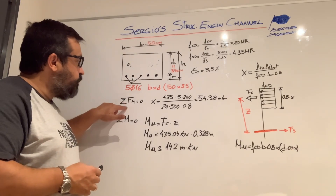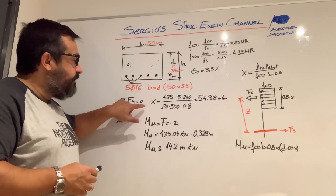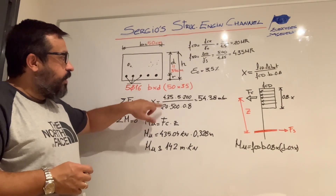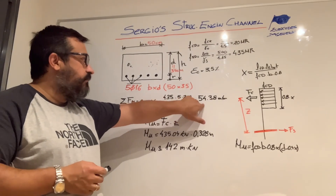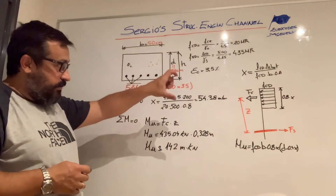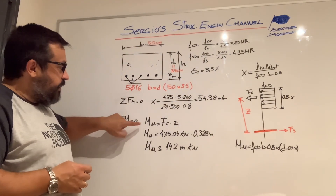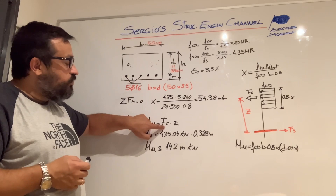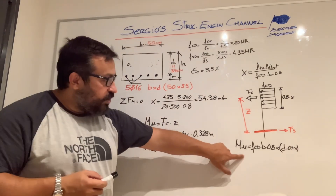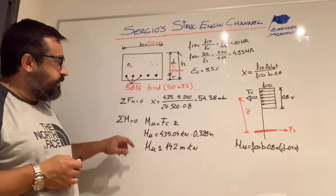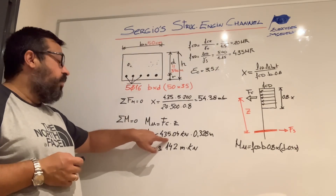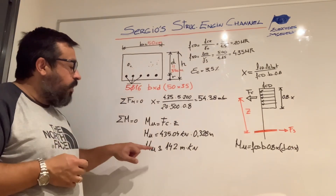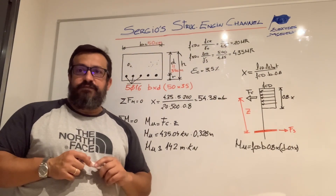As discussed previously, the first thing we do is establish the horizontal force balance to get x, the height of the compression stress block. Working through it, we get that x is equal to 54 millimeters. Then we can get the ultimate bending moment capacity for the section, equal to the compression resultant forces multiplied by the lever arm. The compression force is 435 kilonewtons multiplied by 0.328 meters, giving a final value of 142 kilonewton meters as the ultimate bending capacity for this rectangular section.